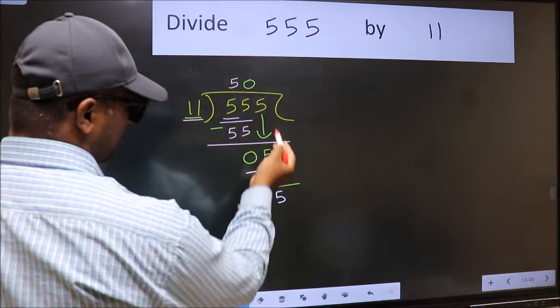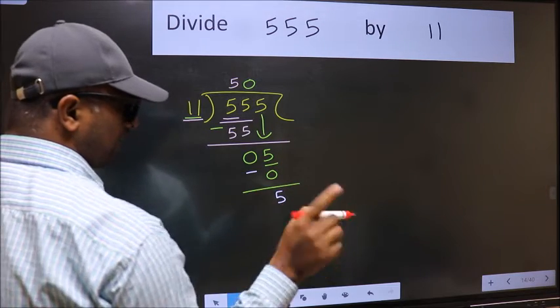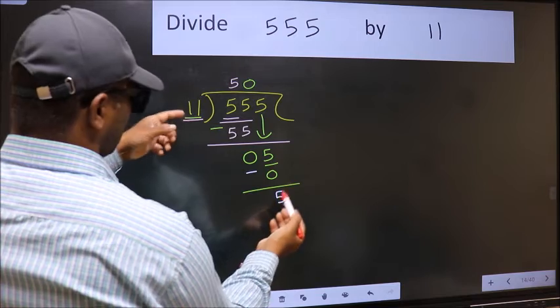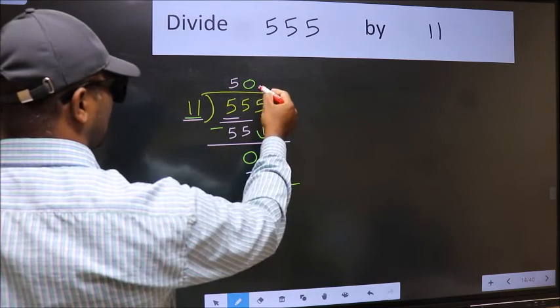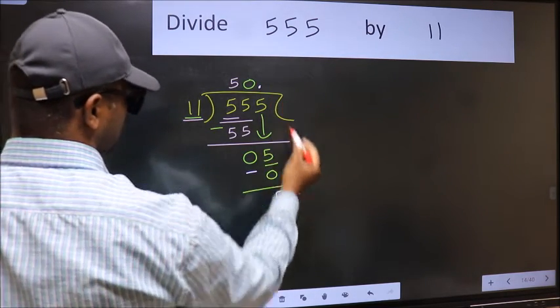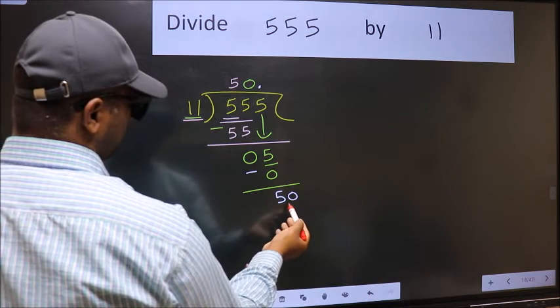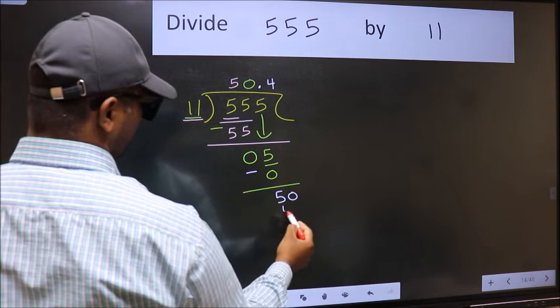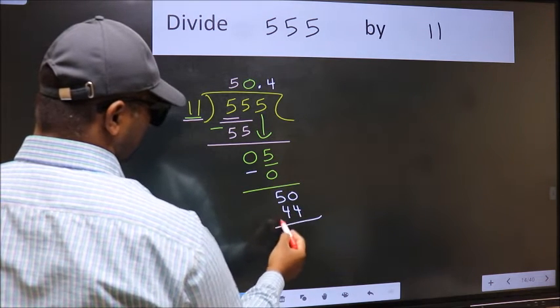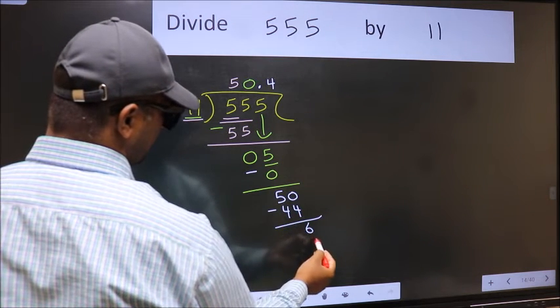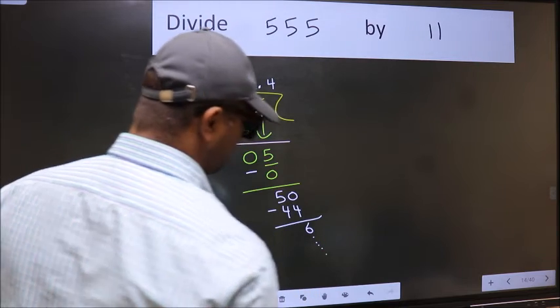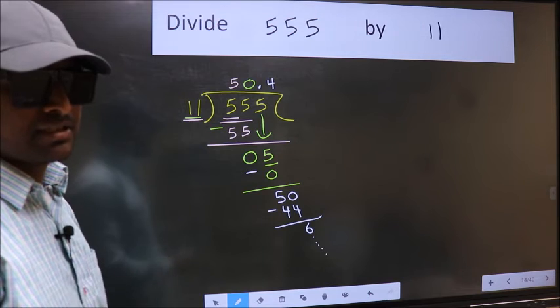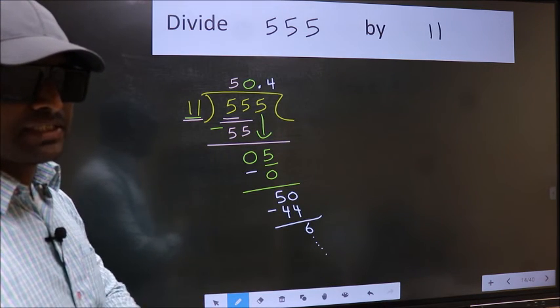Over here, we did not bring any number down, and 5 is smaller than 11, so now you can put dot, take 0, so 50. A number close to 50 in 11 table is 11 times 4, 44. Now you should subtract, you get 6 and continue the division. I am not doing that. Did you understand where the mistake happens? You should not do that mistake.